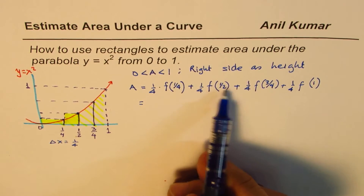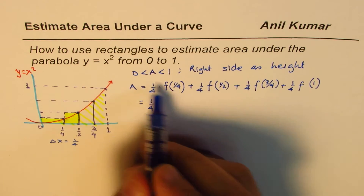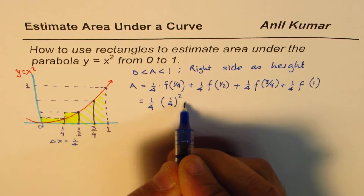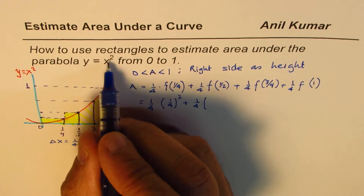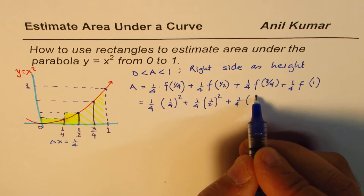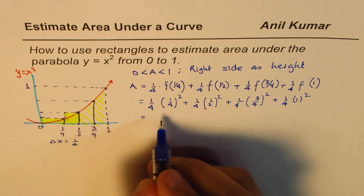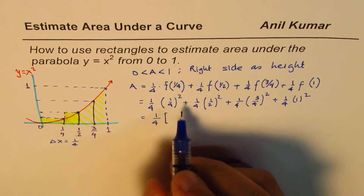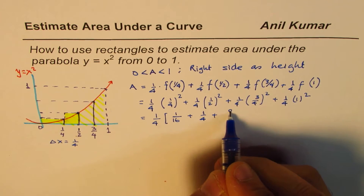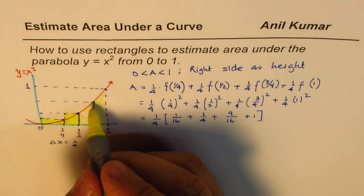Now substituting these values, since y equals x squared, the height at each right endpoint is the square of that x value. So we get: one-fourth times (1/4)² plus one-fourth times (1/2)² plus one-fourth times (3/4)² plus one-fourth times 1². Factoring out one-fourth, we have: one-fourth times (1/16 + 1/4 + 9/16 + 1).